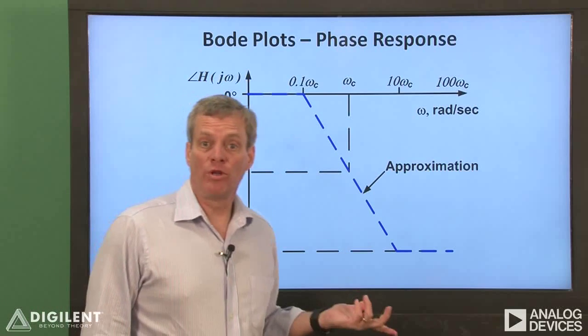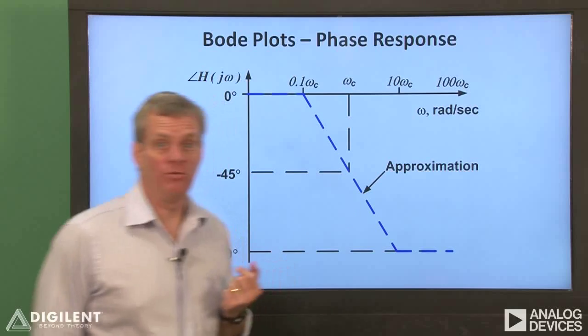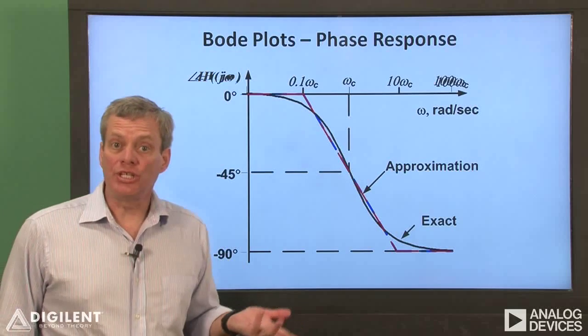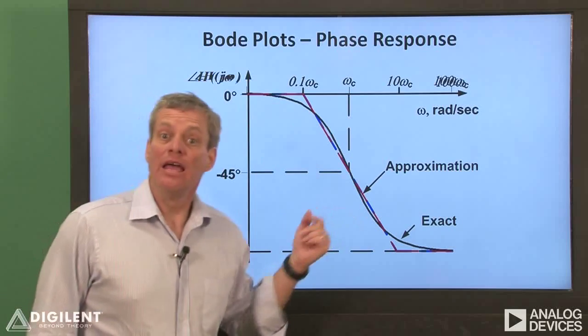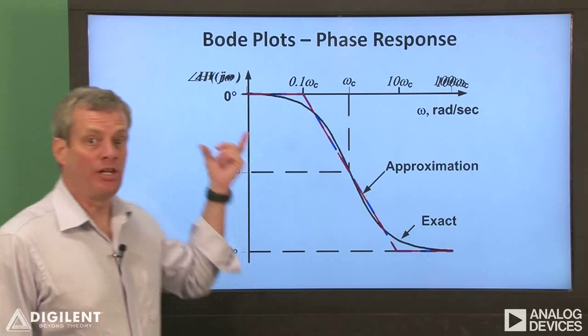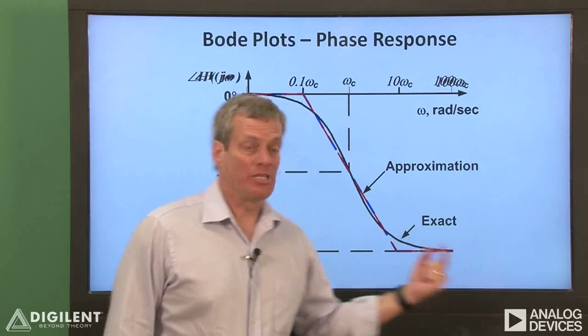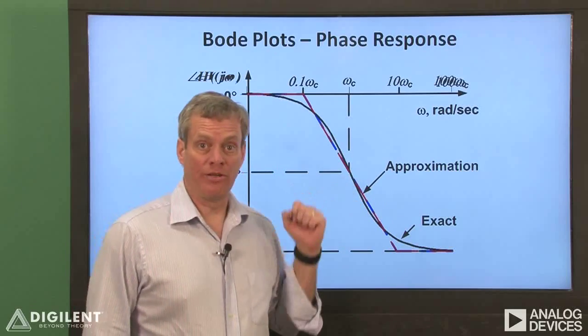The phase shift is negative 45 degrees at the cutoff frequency. The actual shape of the phase response for a first-order low-pass filter is shown here. It agrees with the straight-line approximation at low frequencies, high frequencies, and at the corner frequency.